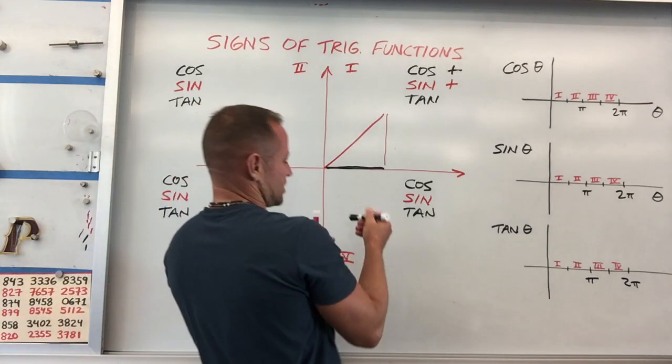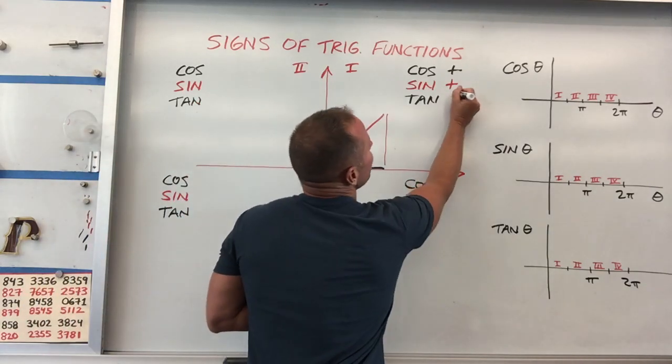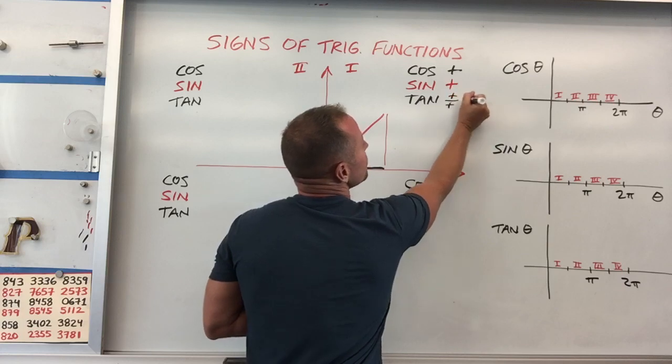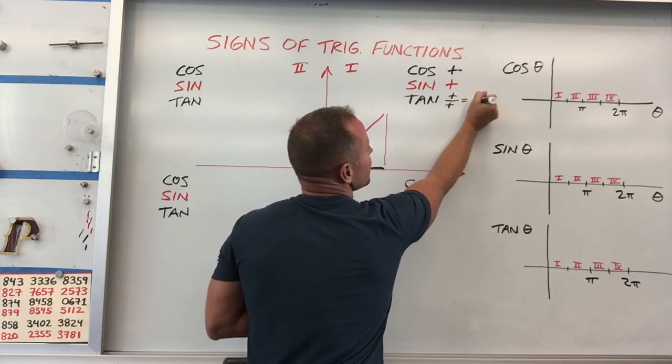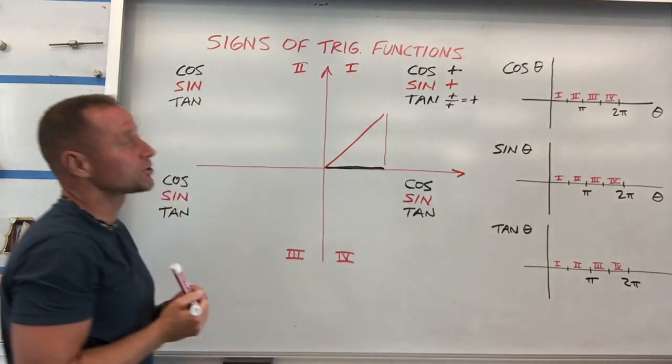Tangent, of course, is just sine over cosine, so that would be positive over positive — so tangent itself is positive in this quadrant.